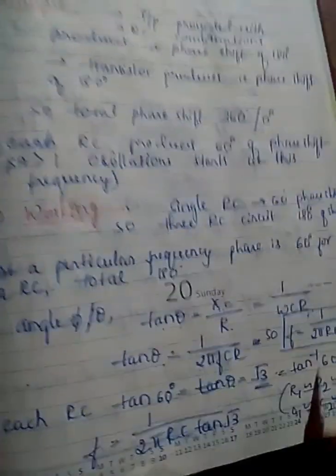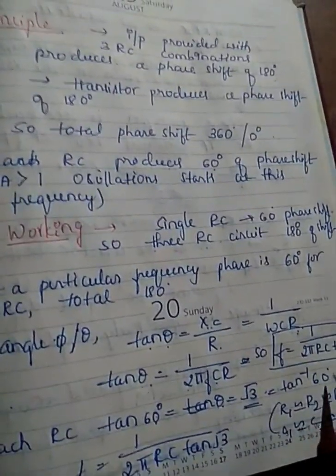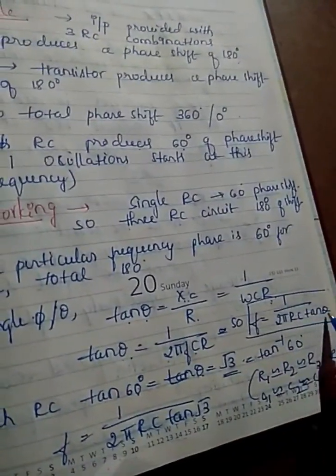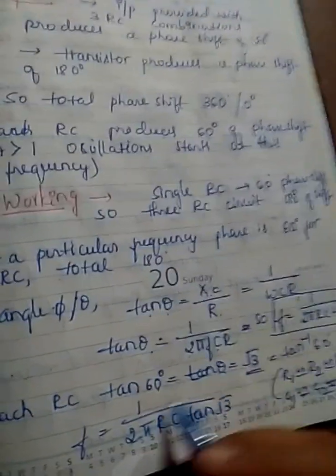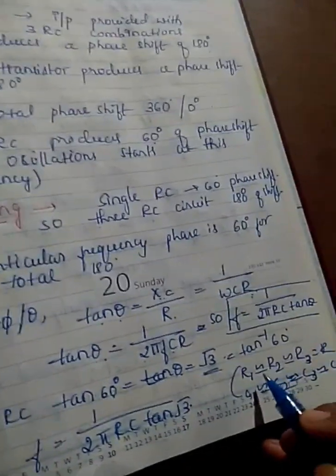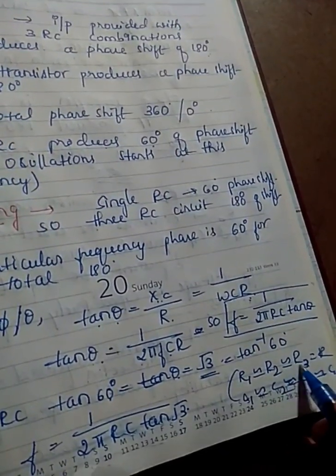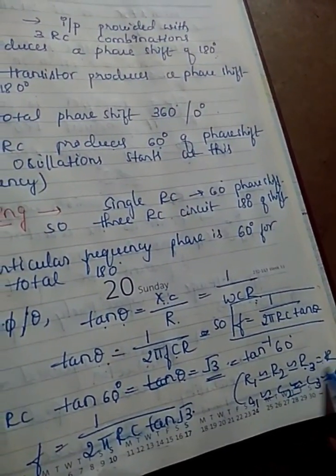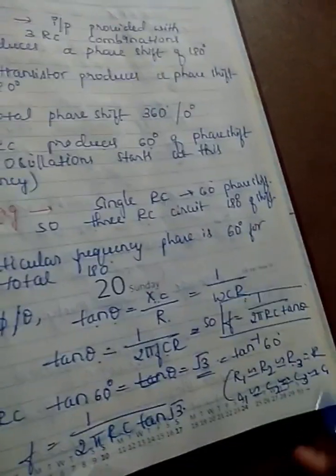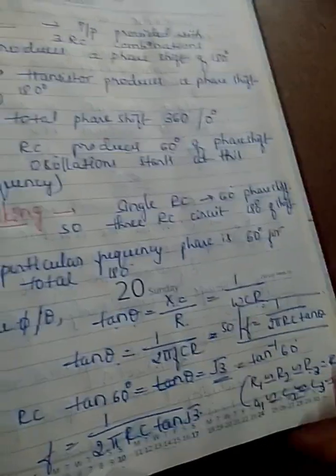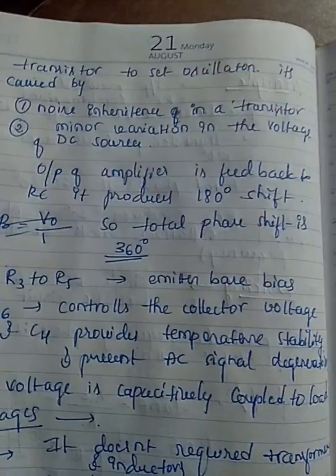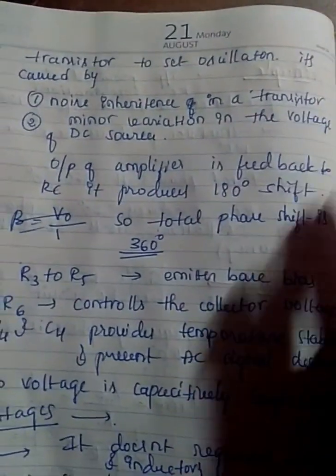So f = 1/(2*pi*RC) * tan(root 3). If we consider R1 nearly equal to R2 nearly equal to R3 = R, and similarly C1 = C2 = C3 = C, the frequency formula simplifies. We equalize all resistors and capacitors in the three RC stages for the transistor-based phase shift oscillator.